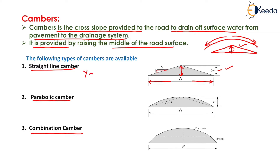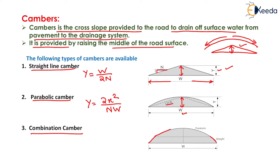For parabolic camber, the distance is Y, the slope is 1 in N, and the overall width is W. The value of Y equals 2x² divided by NW. For combination camber, straight line camber is provided at the starting portions and parabolic camber is provided in the middle portion.